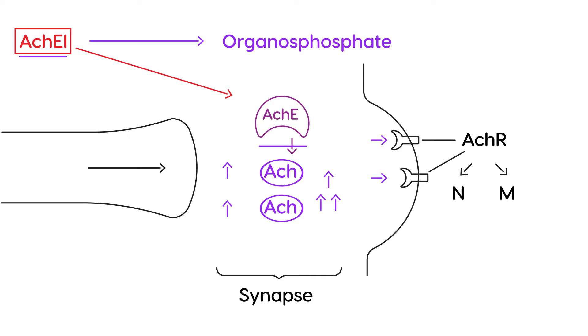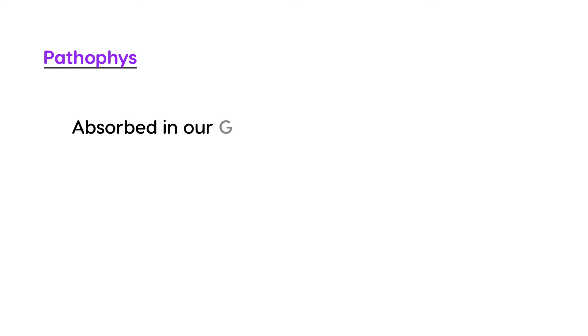This is what organophosphates are — they are acetylcholine esterase inhibitors. They inhibit the enzyme acetylcholine esterase. You commonly find them in insecticides, sprays used to kill bugs. In a clinical vignette, you'll typically have a scenario where somebody is in contact with a spray can or lives on a farm and was exposed to an insecticide.